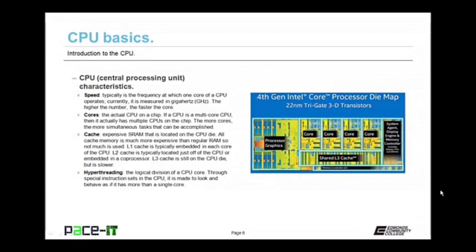The first characteristic of the CPU is speed — typically the frequency at which one core of the CPU operates, currently measured in gigahertz per second. The higher the number, the faster the core. The cores are the actual CPU on a chip — if a CPU is multi-core, it actually has multiple CPUs on the same chip. The more cores, the more simultaneous tasks that can be accomplished. Cache is expensive static random access memory located on the CPU die — all cache memory is much more expensive than regular DRAM, so not much of it is used.